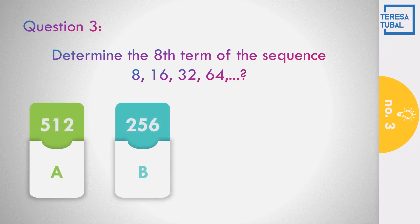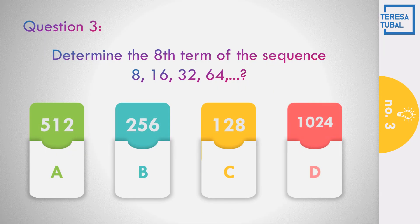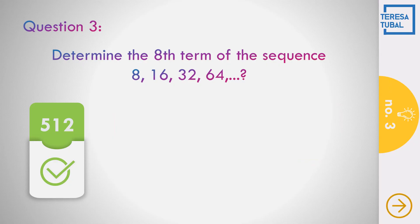Question number 3: Determine the eighth term of the sequence 8, 16, 32, and 64. The choices are A) 512; B) 256; C) 128; D) 1,024. The answer is A, equal to 512.